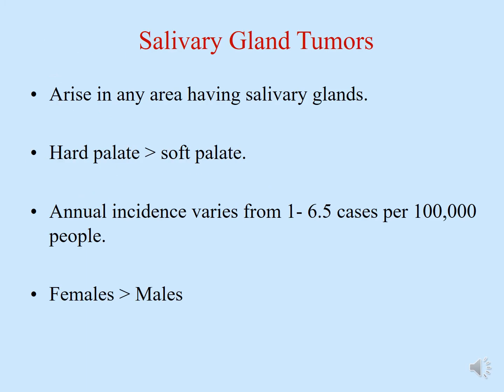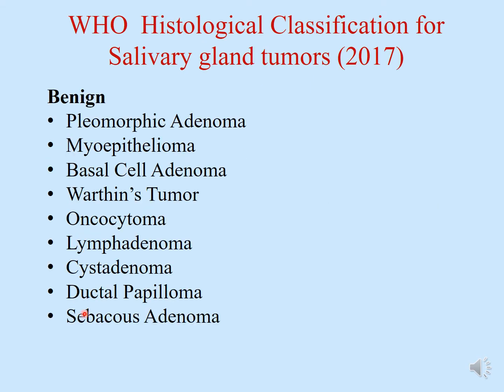Salivary gland tumors are always a possibility. They are more common in the hard palate as compared to the soft palate. The annual incidence varies from 1 to 6.5 cases per 100,000 people, and salivary gland tumors have been found to be more common in females as compared to males.